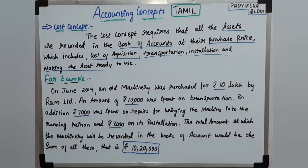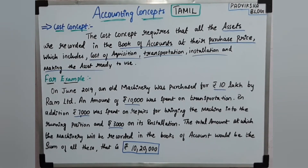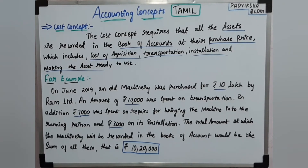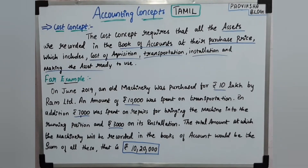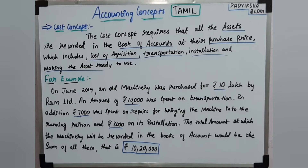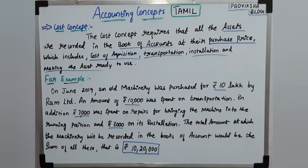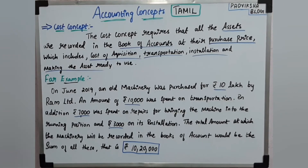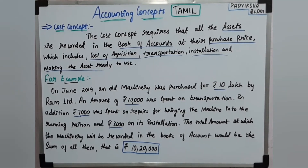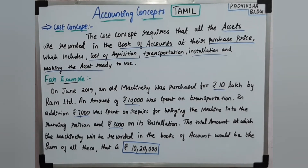For example, on June 2019, an old machinery was purchased for 10 lakhs by Ram Limited. An amount of 10,000 rupees was spent on transportation. In addition, 7,000 rupees was spent on repairs for bringing the machinery into running position, and 3,000 on its installation. The total amount which the machinery will be recorded in the books of accounts would be the sum of all these, that is 10 lakhs 20,000.